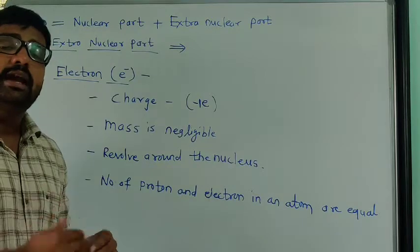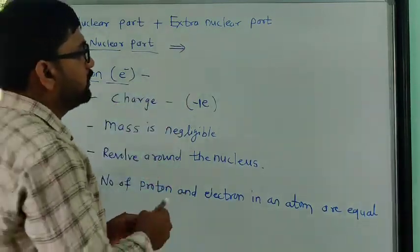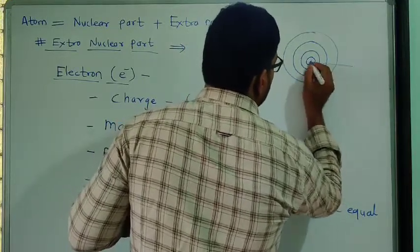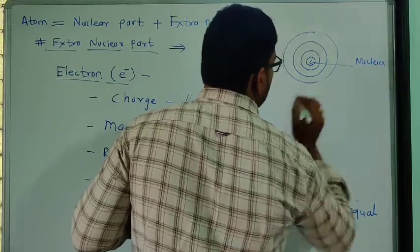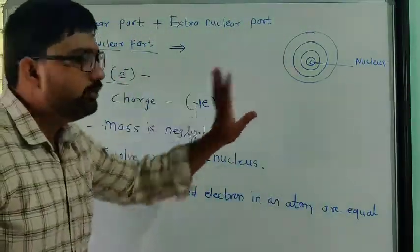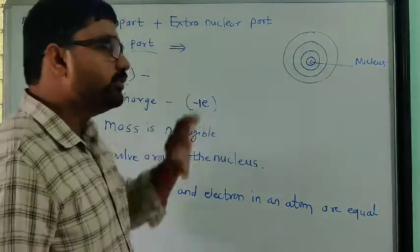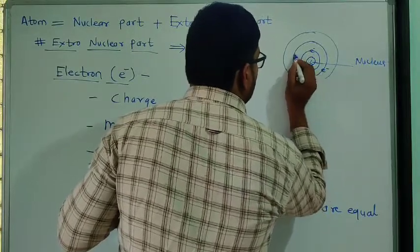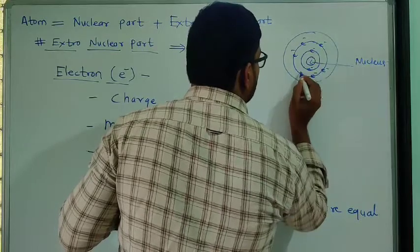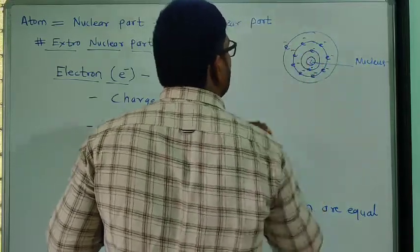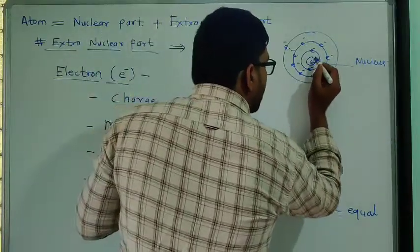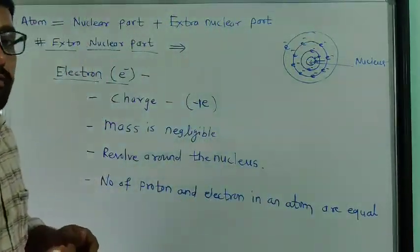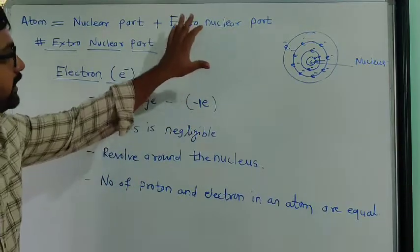Today we have to study the extra nuclear part. Suppose this is the structure of atom. We call this the nucleus - that is the nuclear part. Outside the nucleus, the electrons revolve around the nucleus. The space between the nucleus and the shell of the electron - that much part is included in the extra nuclear part.